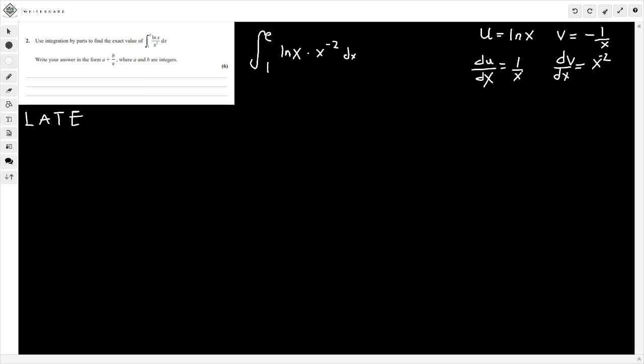Bi-parts, remember, this is in your formula book. You don't need to worry about memorising it. But just remember, it's uv minus the integral of v du by dx. If we do this now, what we're going to get: u times v, so ln x times minus 1 over x. If I rewrite this, it's going to be minus 1 over x times ln x. That's my uv bit.